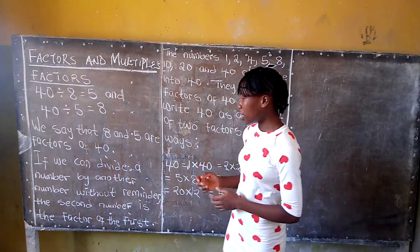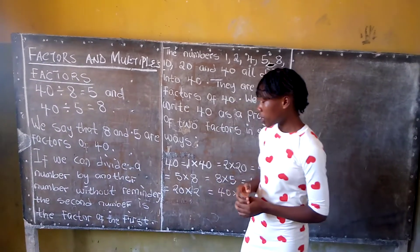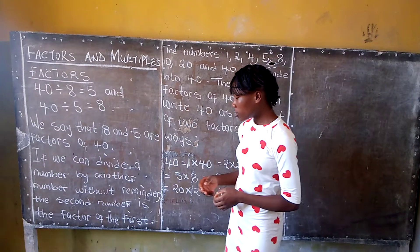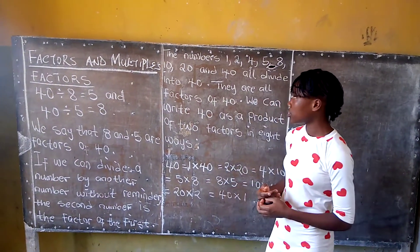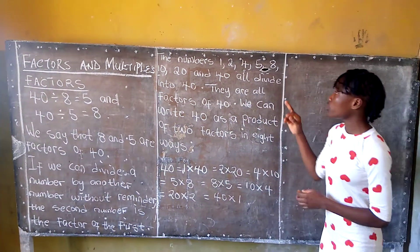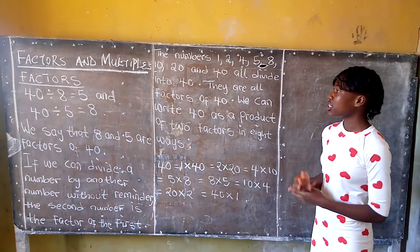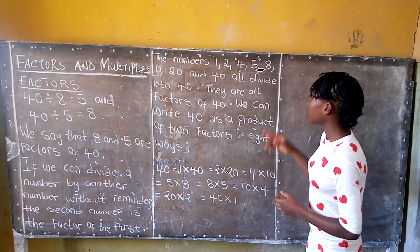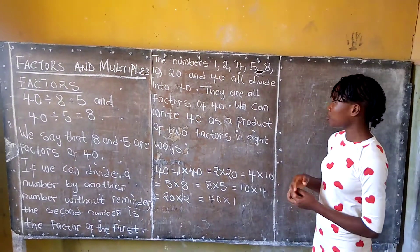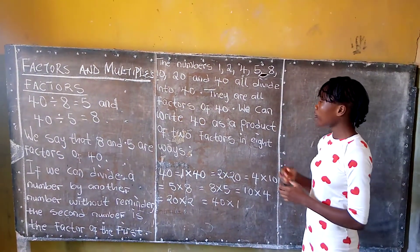If we can divide a number by another number without remission, the second number is the factor of the first. The numbers 1, 2, 4, 5, 8, 10, 20, and 40 all divide into 40. They are all factors of 40.